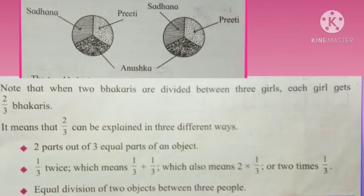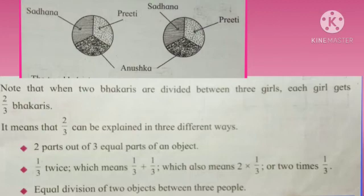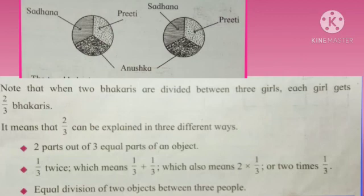Two upon three can be explained in three different ways. First, two parts out of three equal parts of an object. Next, one third twice — which means one upon three plus one upon three, which also means two multiplied by one upon three, or two times one upon three. One upon three plus one upon three equals two upon three. So two multiplied by one upon three gives two upon three. Third, equal division of two objects between three people — two objects divided among three people.